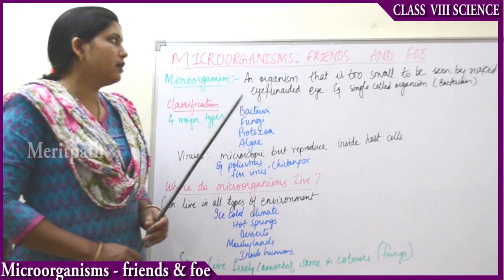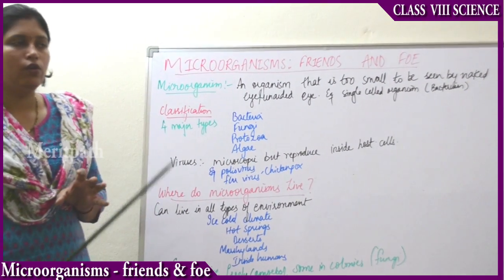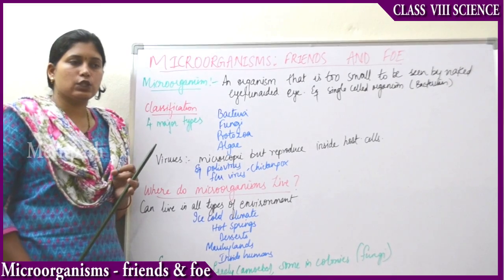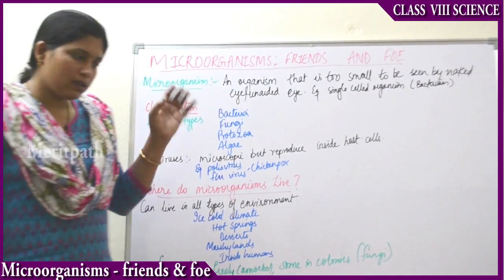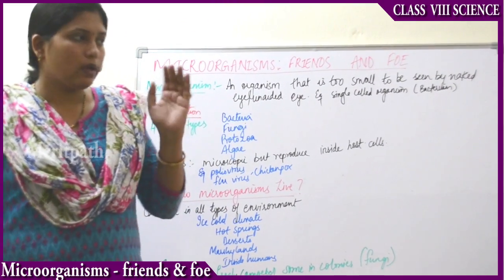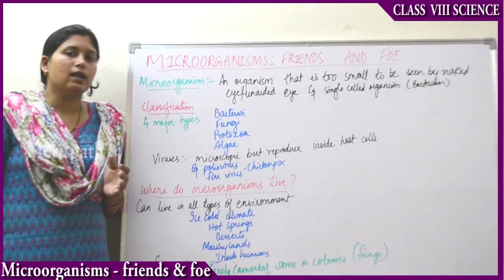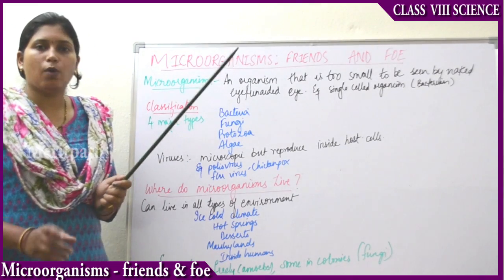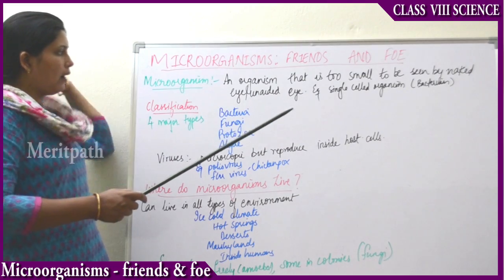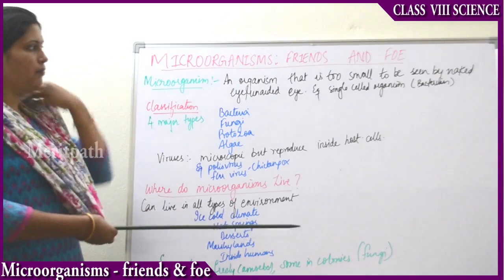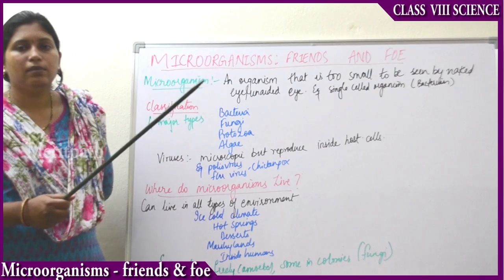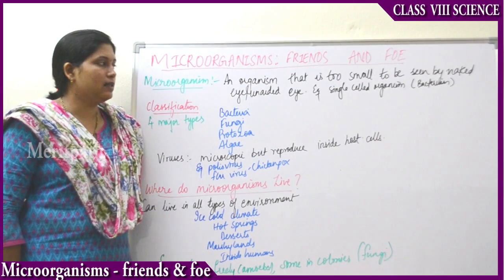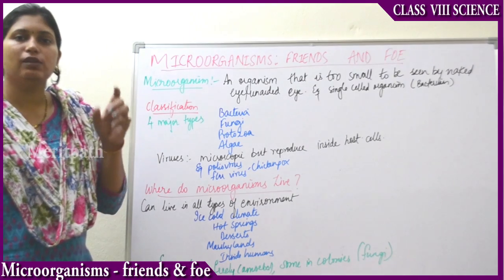The new chapter we are going to study is Microorganisms: Friends or Foe. We see many organisms living around us in the land, water, and soil. But there are some organisms we cannot see with our eyes — we can only see them under a microscope. They are so small in size. These organisms are known as microorganisms. The definition of a microorganism is: an organism that is too small to be seen by the naked eye or unaided eye. An example is bacteria, which is usually a single-cell organism.